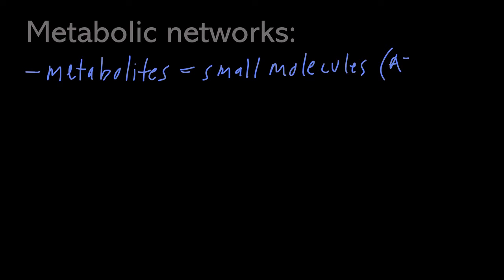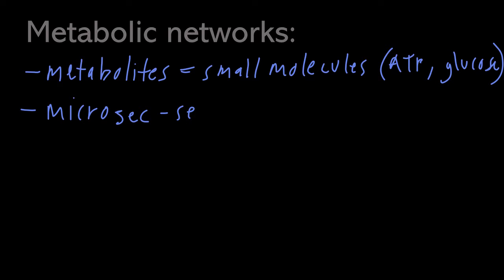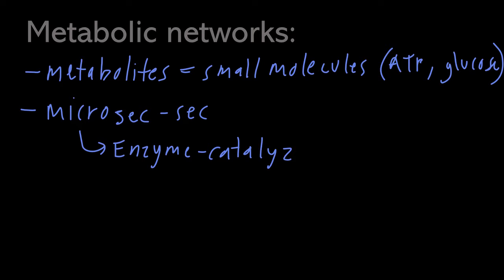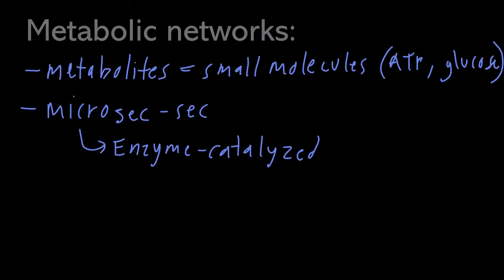Some examples of metabolites would be ATP or glucose, which are both involved in glycolysis. The reaction rates within these networks happen very quickly — these are the fastest of the three networks and they happen on the order of microseconds to seconds. The reason they happen so quickly is because most of the reactions within these networks are enzyme-catalyzed. Additionally, because metabolic networks involve small molecules, they diffuse quite quickly, which also contributes to this overall fast rate.